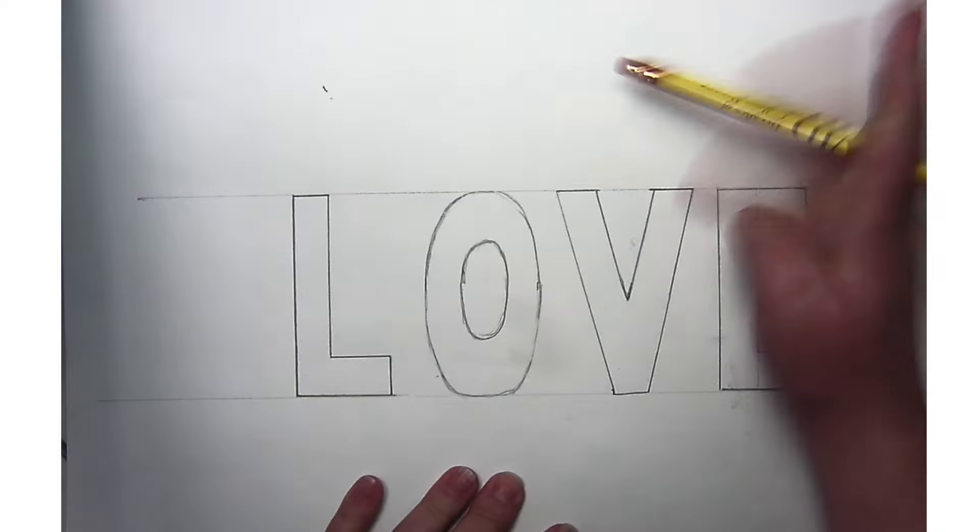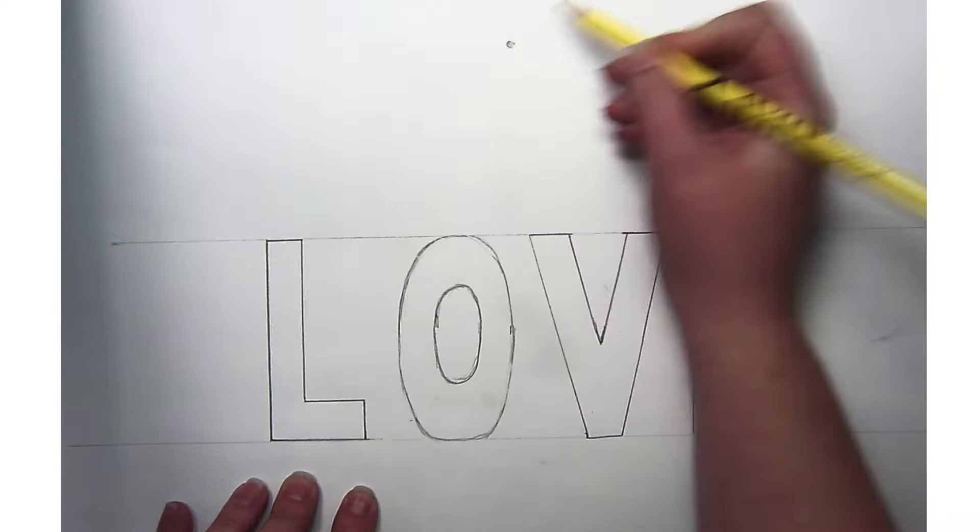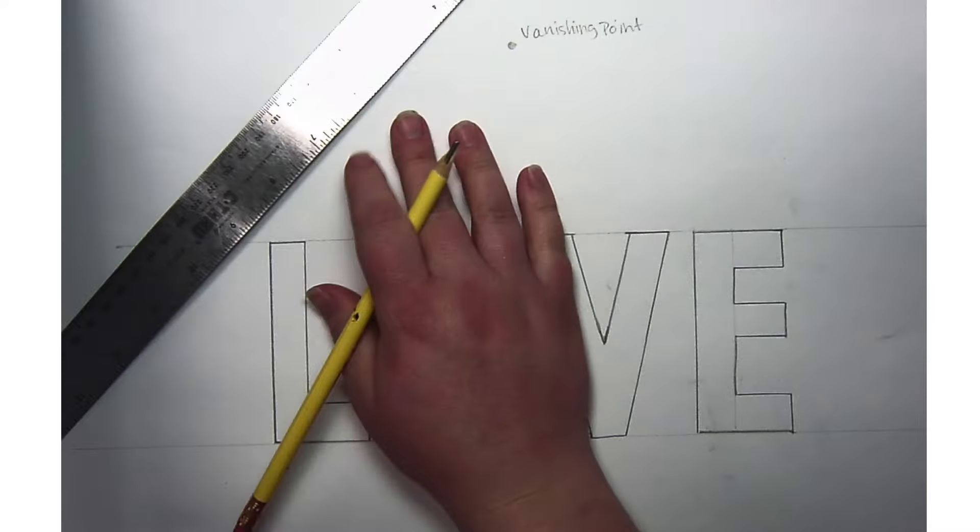The next step is to draw in my vanishing point. Remember, that's where everything recedes into the distance. Here's my vanishing point - I'm going to make everything connect to that point. I start with the first corner and extend it all the way to that vanishing point, then I go to the next sharp corner and extend it to the vanishing point.